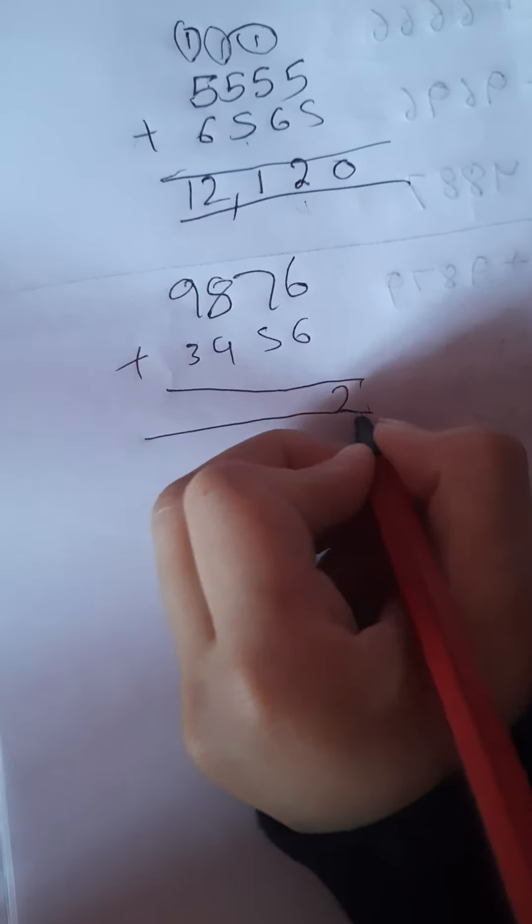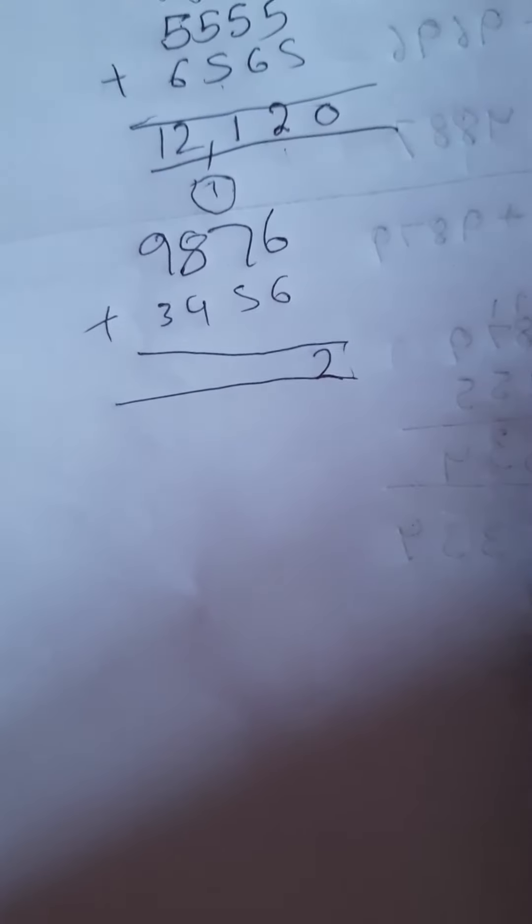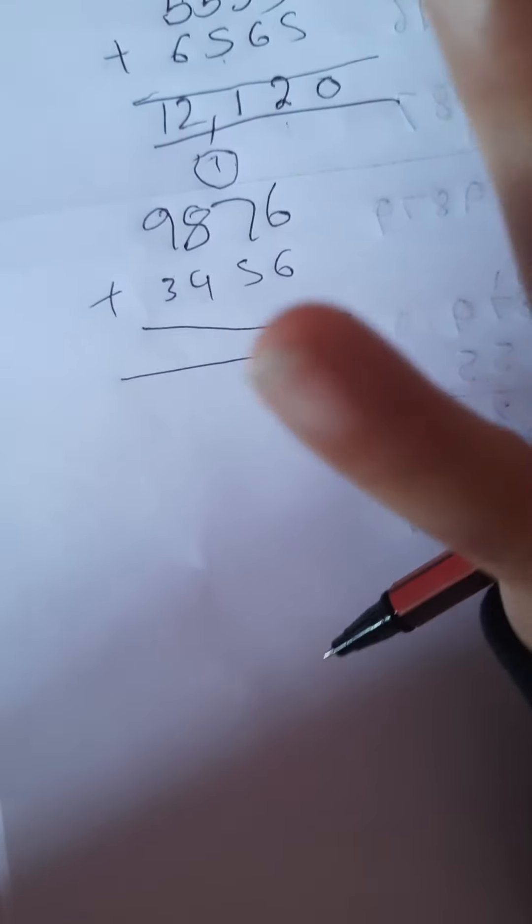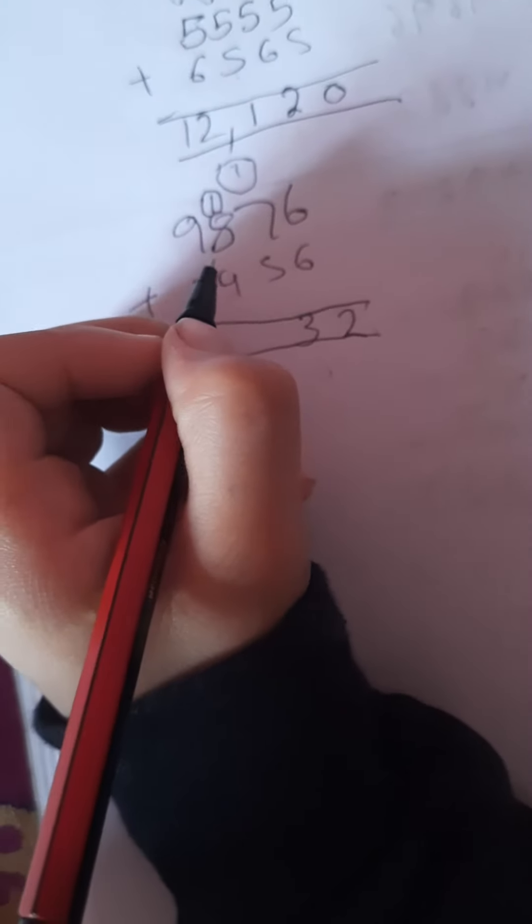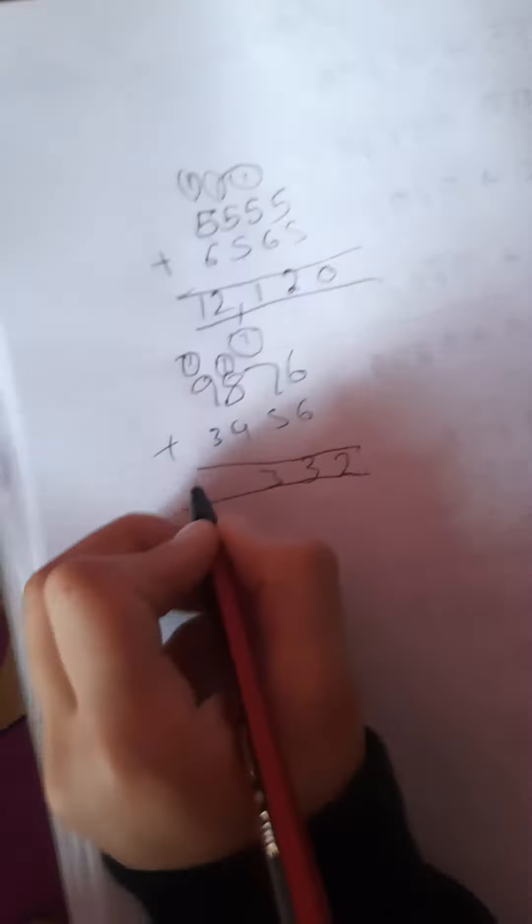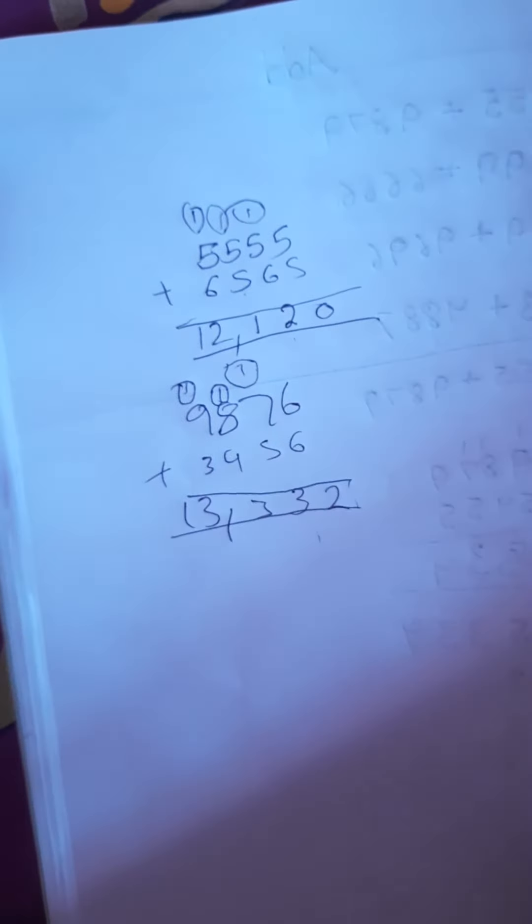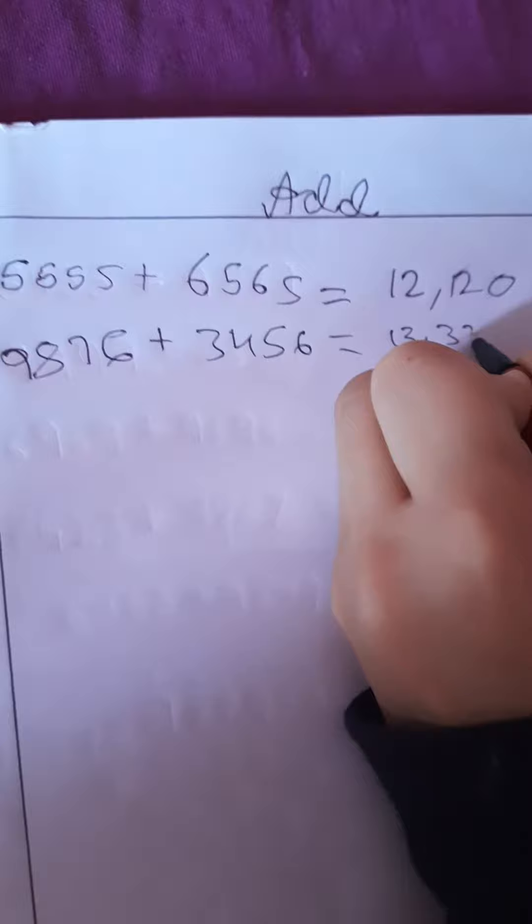6 plus 6 is 12. One borrowing. 7 plus 1, 8. 8 plus 5. 9, 10, 11, 12, 13. So I have to write here 3. 9 plus 4, 15. 10, 11, 12, 13. So let's write now. Let's write here. There is 13,332. This is the answer.